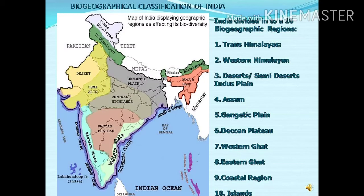The biogeographical classification of India is also considered as a basis for the biodiversity of the Indian flora. On the basis of geographical parameters and climatic factors, the biogeographical classification of our country is made. According to this, our country is divided into ten biogeographic regions. Towards the north there is the Trans-Himalaya. Towards the west, next to the Trans-Himalaya, there is the Western Himalaya.